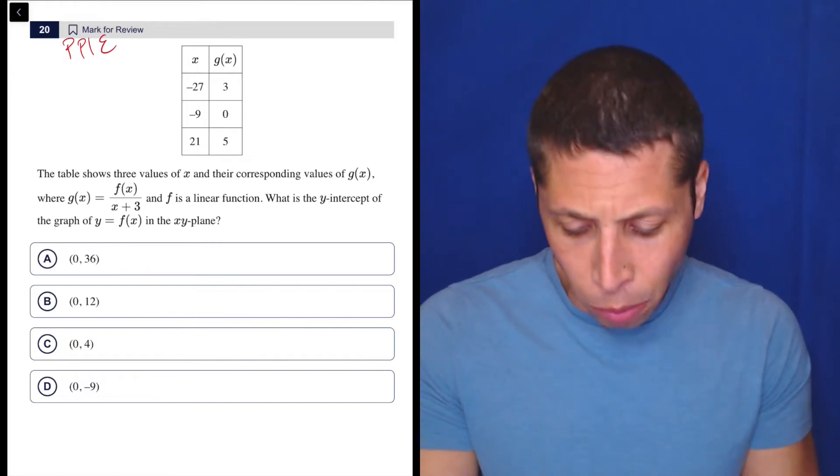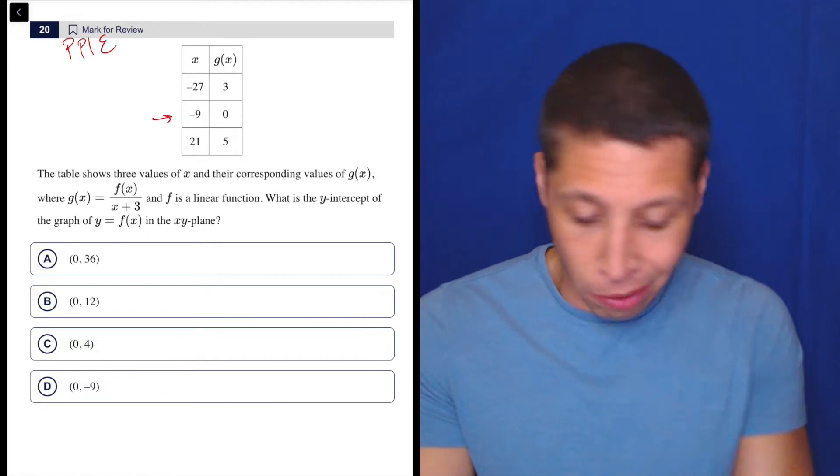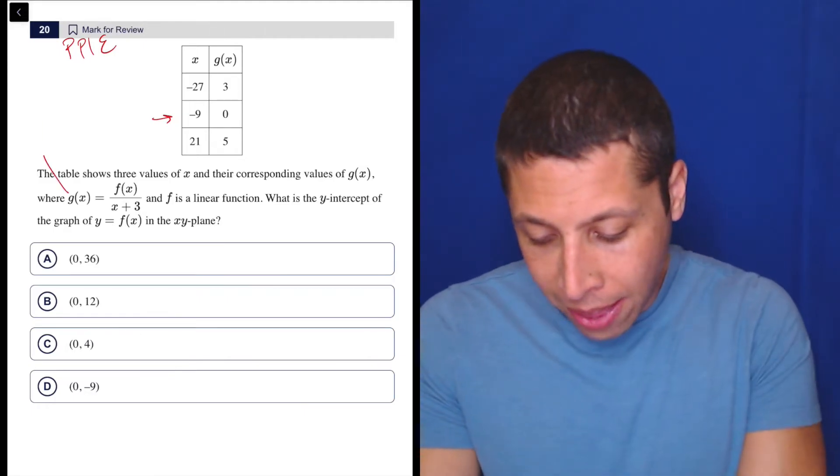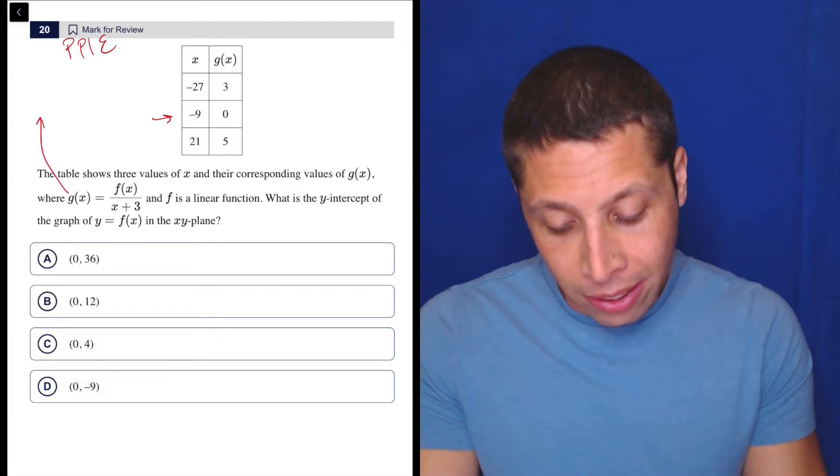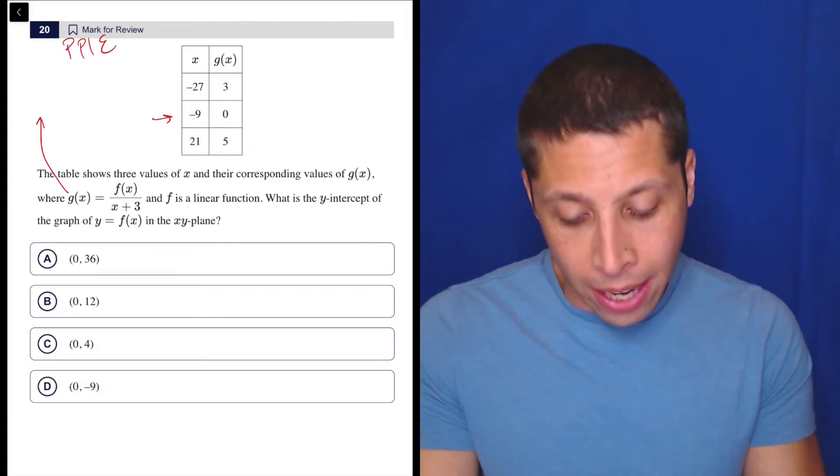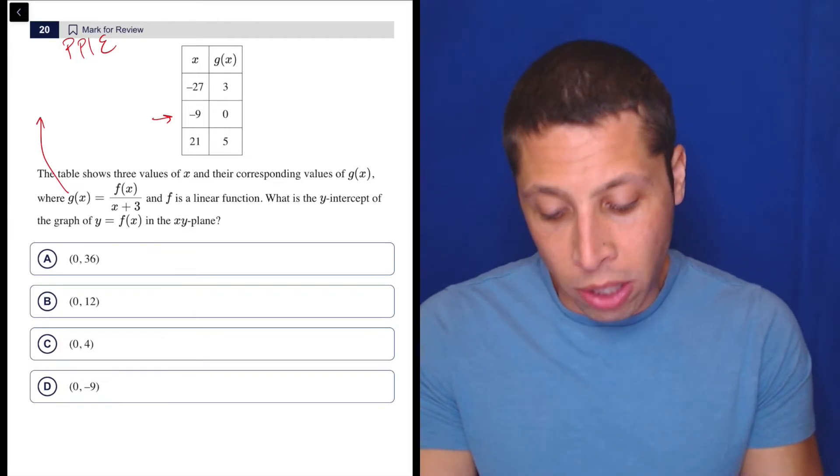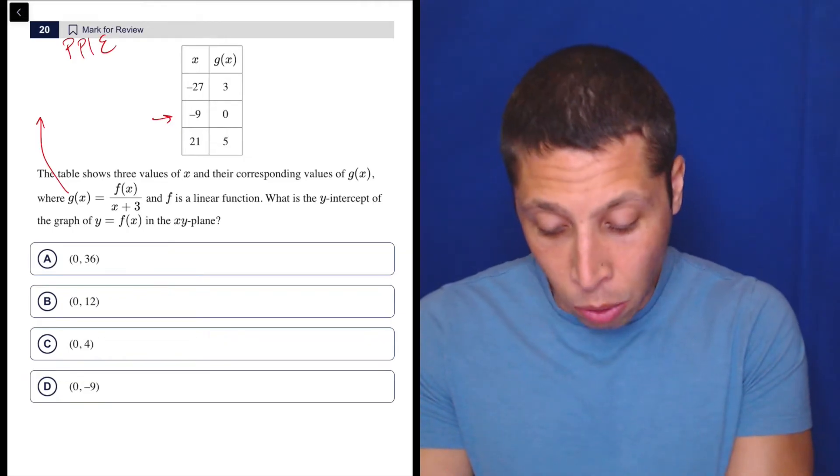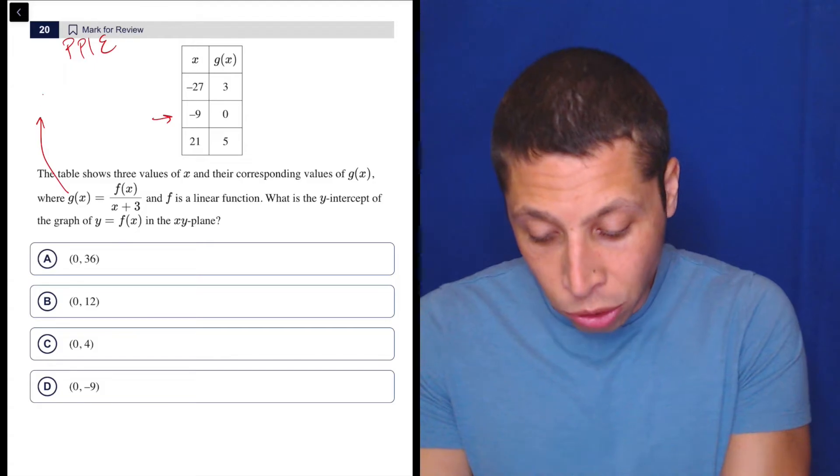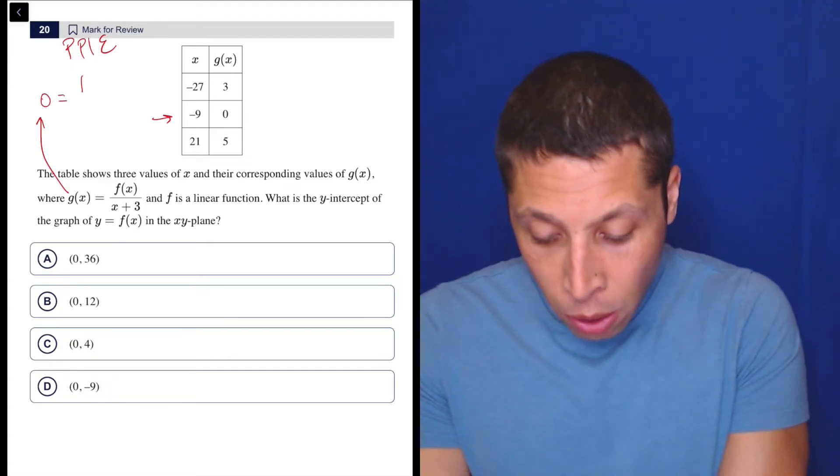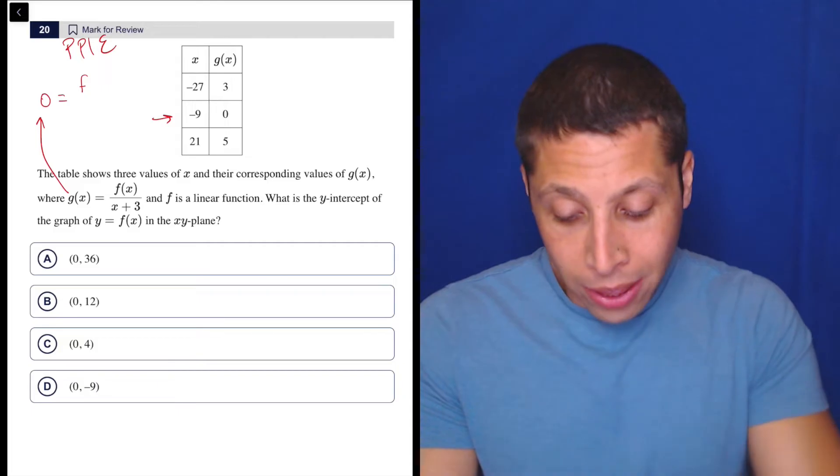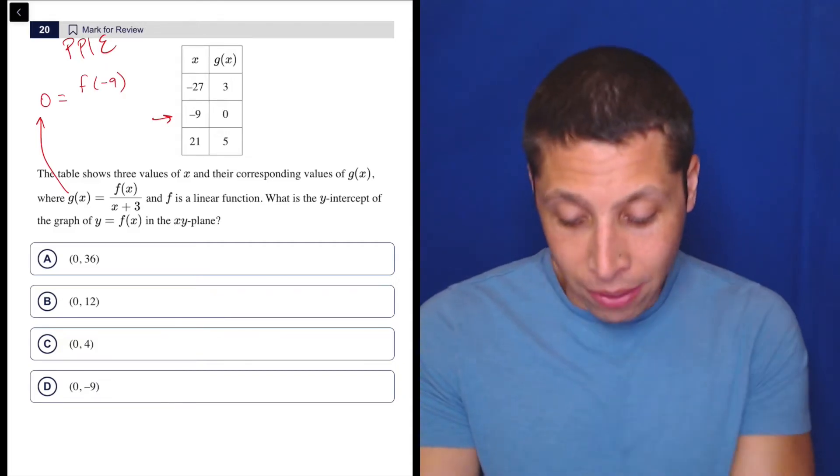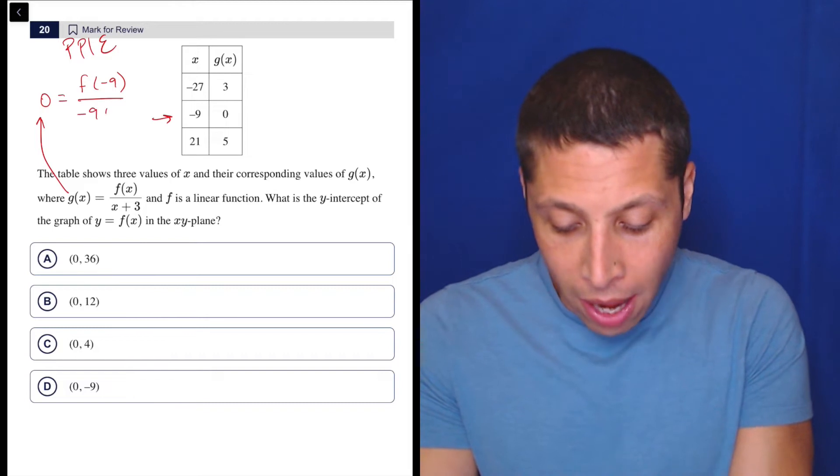So let's start with like an easy point here. Maybe we start with the zero out of kind of habit and an attraction to those zeros. So if I plug that point in here, what am I really saying? That g of nine, so g of nine is equal to zero. So I would say, okay, that means the zero is my g of x, so zero is equal to, well, x is negative nine. So put that negative nine in for all the x's. That includes this one here.